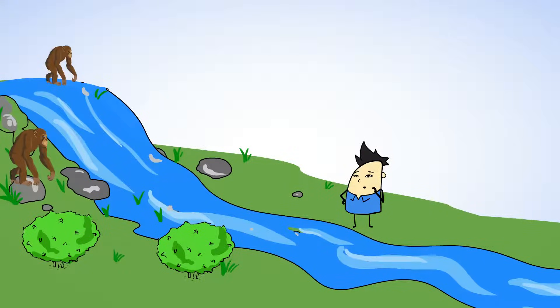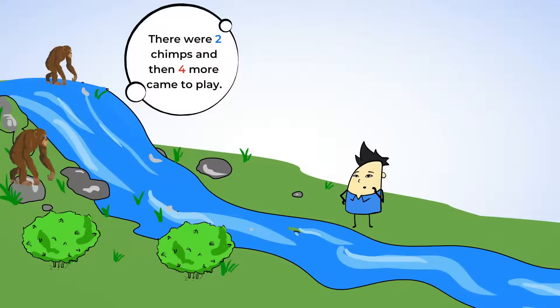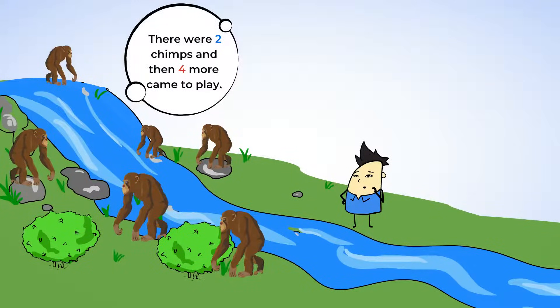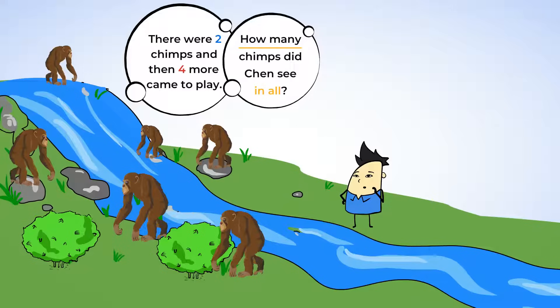So, Chen just said he saw some chimps. He said there were two chimps putting on a show and then four more chimps came over to play. How many chimps did Chen see in all? Okay. So, Chen said he saw two chimps and then four more. So, our numbers are two and four. Let's write those down. Are we adding or subtracting?